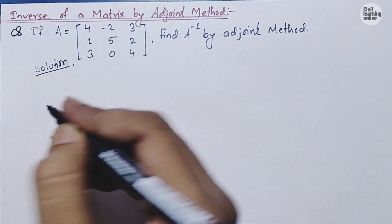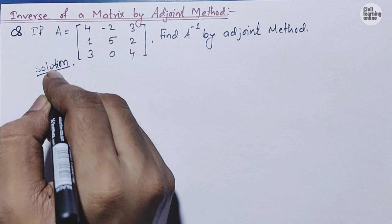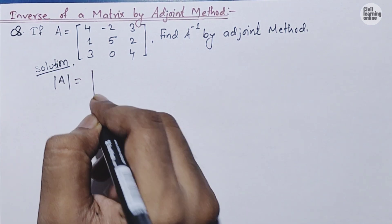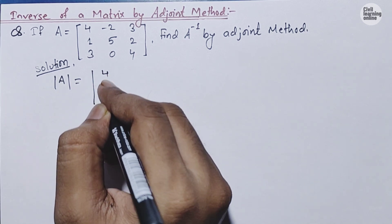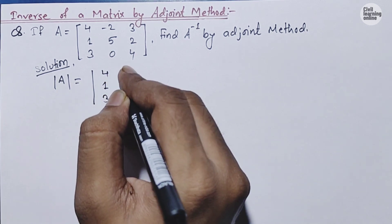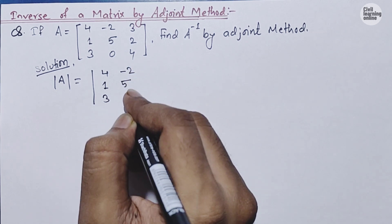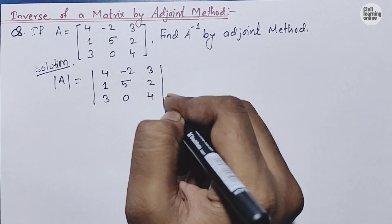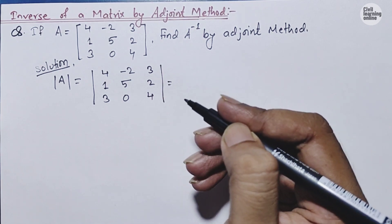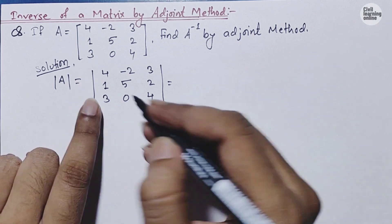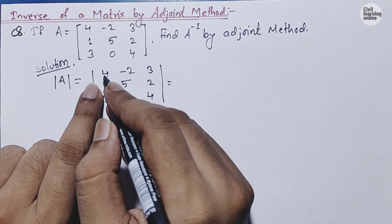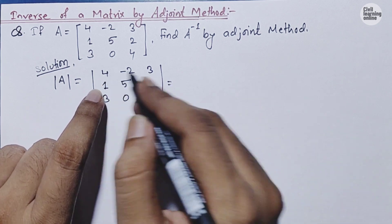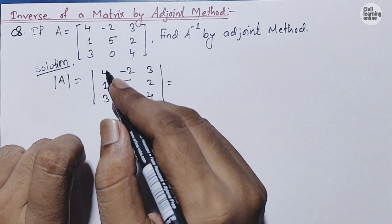First, let us calculate the determinant of matrix A. The determinant of a matrix is represented by two straight lines. Write down the elements of the matrix: 4, 1, 3 / -2, 5, 0 / 3, 2, 4. We can calculate this determinant by expanding along a row or column — I am solving by expanding along the first row.